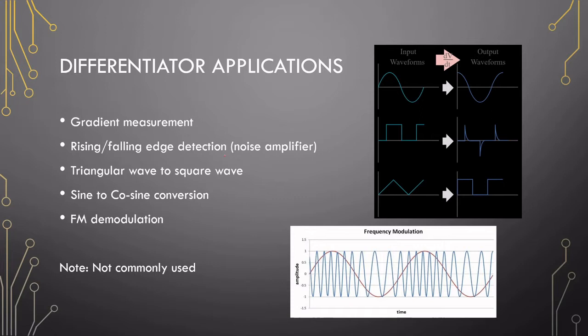And I forgot to mention, the rising and falling edge detection is also why the differentiator is called a noise amplifier. Whenever you get this sharp increase in a signal, you will get a spike on the output. This is also why the amplifier is not commonly used, because of this noise amplification effect.